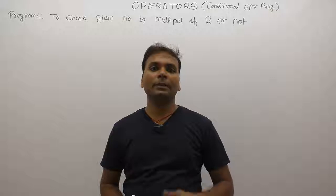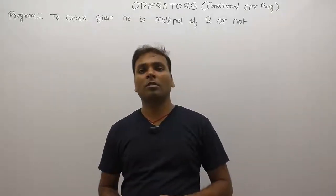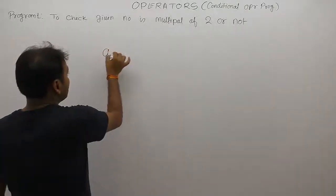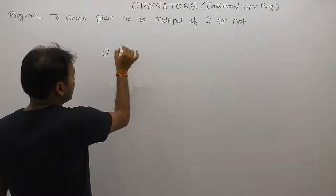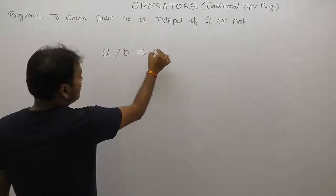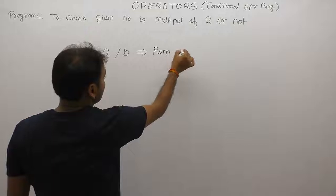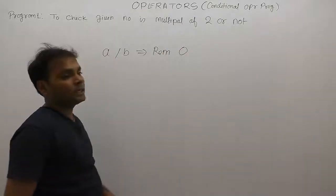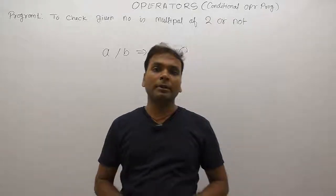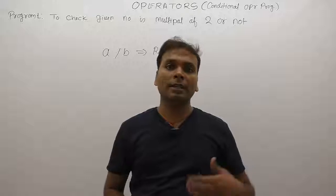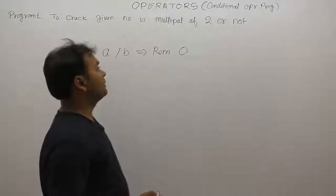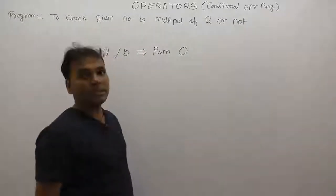How to identify if a given number is a multiple of another number or not. If A is divided by B and is completely divided, then the remainder is always 0. In the case of divisibility or in the case of a multiple, remainder is 0. Otherwise remainder is non-zero.